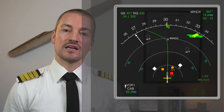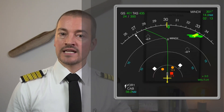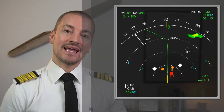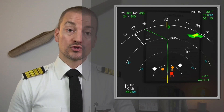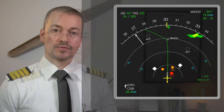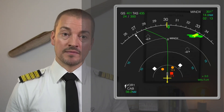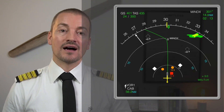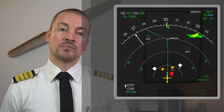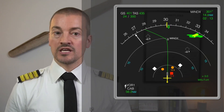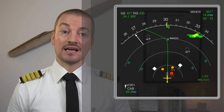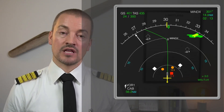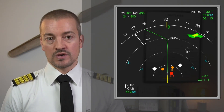These intruders are shown as a filled-in white spade and an amber circle but without any altitude information below the symbol. They will be shown as both proximate, TA, and RA even if they are thousands of feet above or below us, because the TCAS system still treats them as if they were at the same altitude.